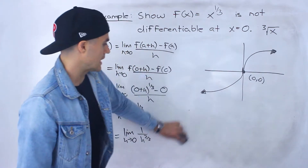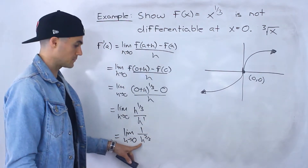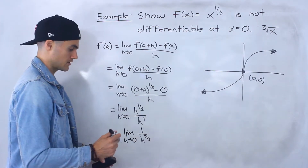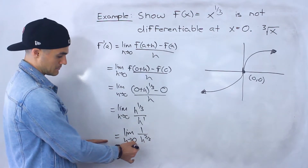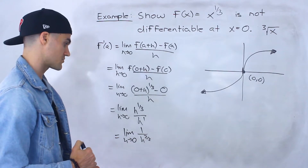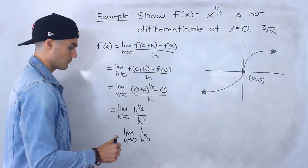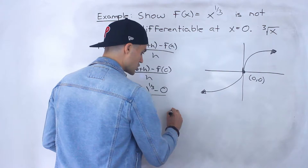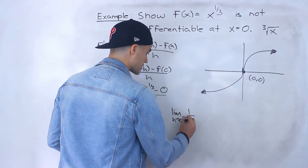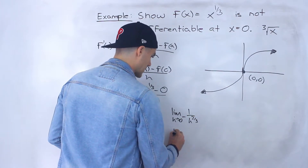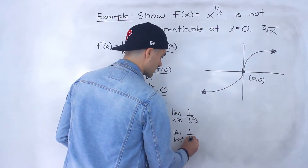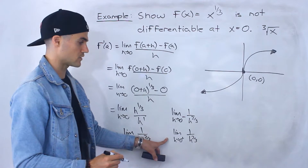So this simplifies to 1 over h^(2/3). We can graph this function — I'll show you how it looks — but on a test without a graphing calculator, notice you can't plug in 0 for h because it makes the denominator 0, so you can't divide by 0. What you can do is check the limit as h approaches 0 from the negative side, and the limit as h approaches 0 from the positive side, by making a table of values for both.